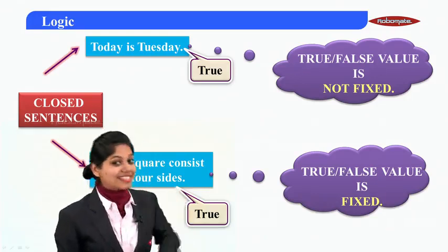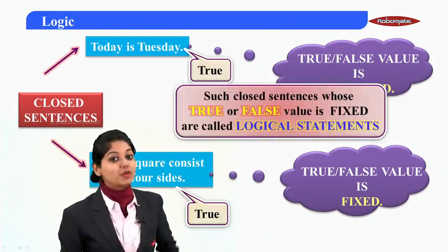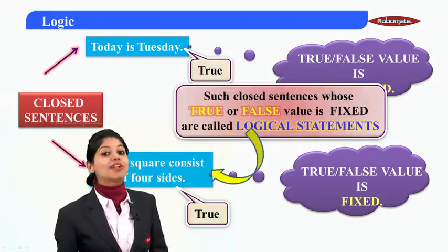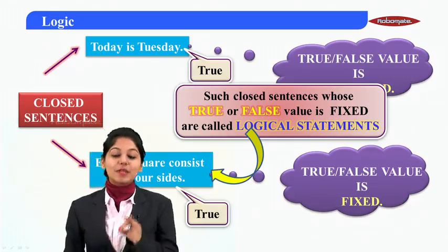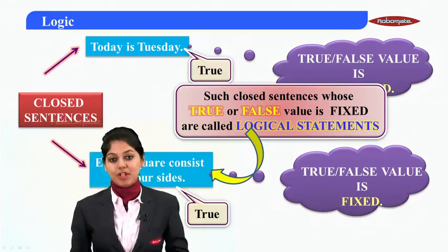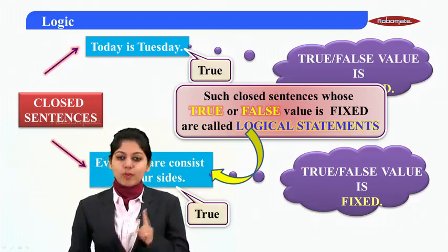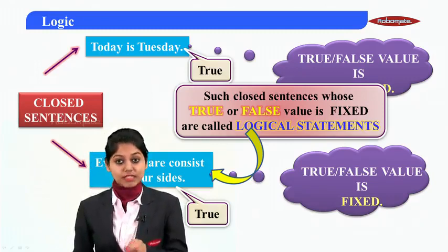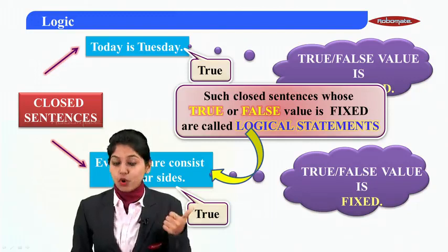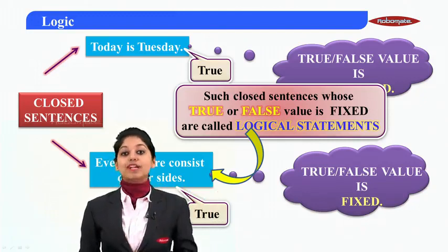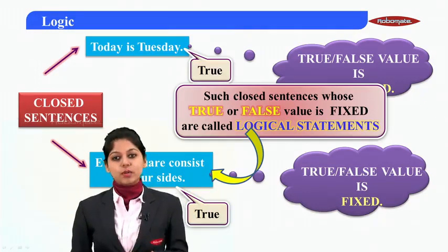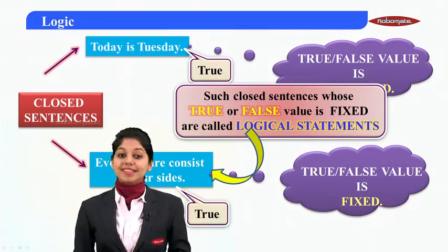Such sentences where the truth value is fixed — meaning a statement is true or false and will remain the same throughout — are called logical statements. This is a very important definition to remember. We are going to learn more about logical statements in the next modules. Till then, thank you.